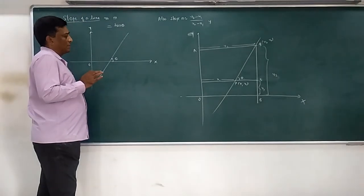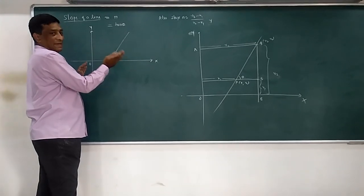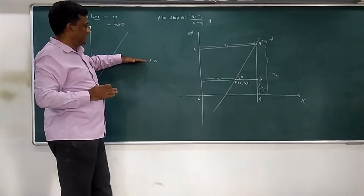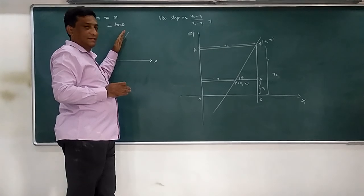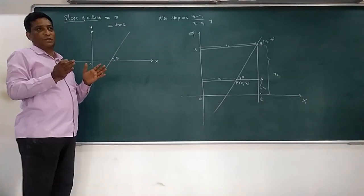Basically slope ka matlab hai chadhav utaar - you can see how much it is inclined with the x-axis. Here reference is the x-axis. How much it is inclined with the x-axis gives you slope. In simple words, slope means inclination.